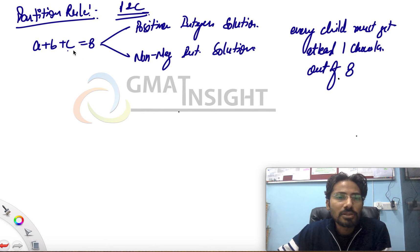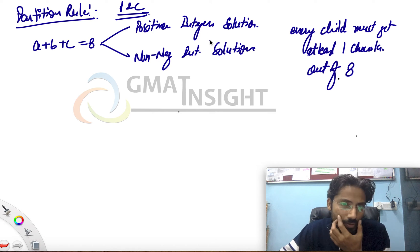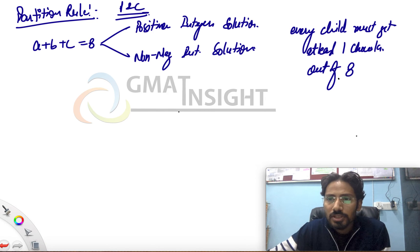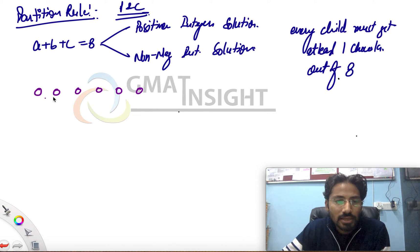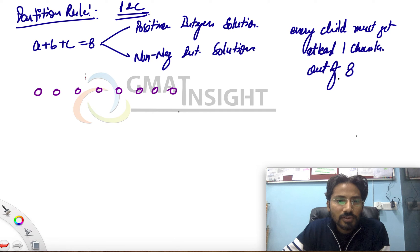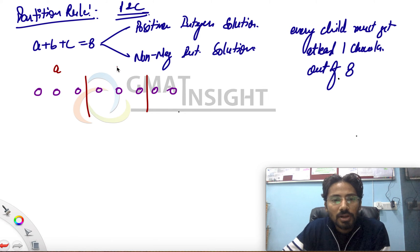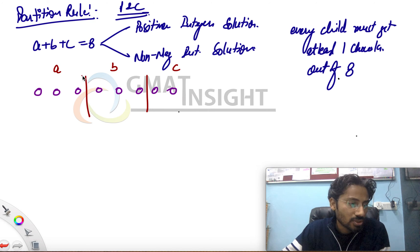The first equation we form is a + b + c = 8, and we have to divide this eight into three parts such that each part has a value starting minimum from one, because we are looking for the positive integer solution. I'm drawing these eight chocolates by means of eight circles. Now I have to divide these eight chocolates into three parts, and any group can be divided into three parts if there are two partitions placed. This part will be a, the middle part will be b, the third part will be c, and as the partitions move, there will be different possible solutions of a, b, and c.